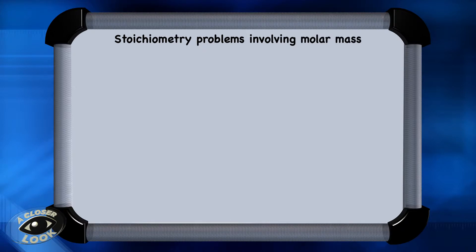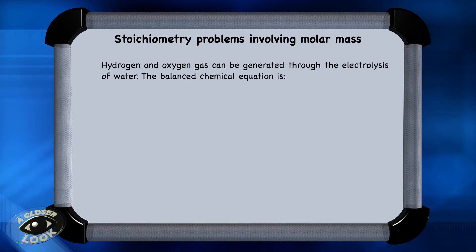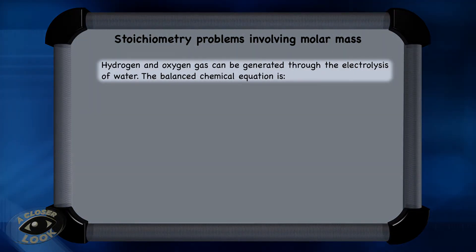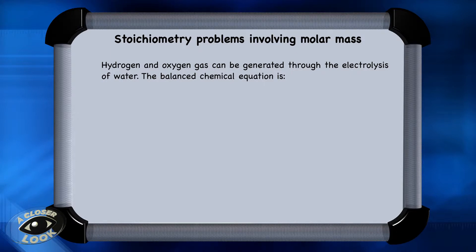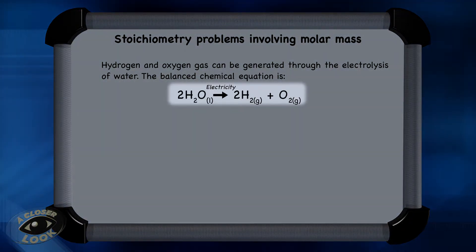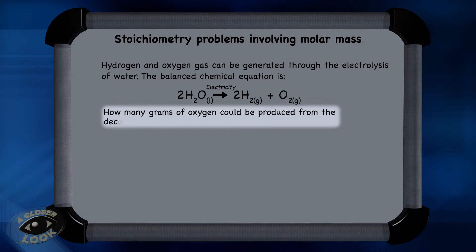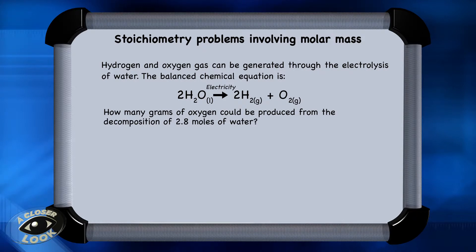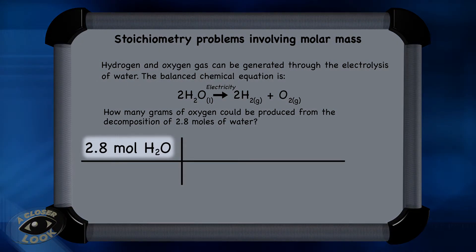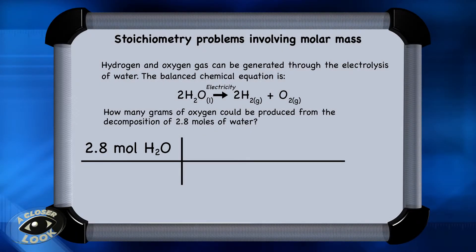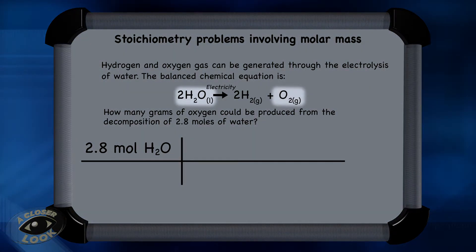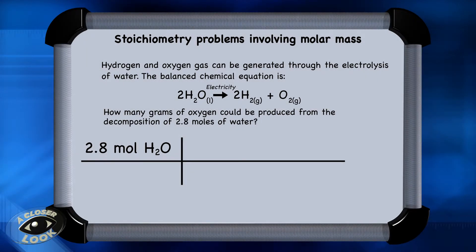This next problem is a stoichiometry problem involving molar mass. Hydrogen and oxygen gas can be generated through the electrolysis of water. The balanced chemical equation is: 2 moles of water yields 2 moles of hydrogen plus 1 mole of oxygen. The question asks how many grams of oxygen could be produced from the decomposition of 2.8 moles of water. The first step is to put 2.8 moles of water in the upper left-hand corner of the conversion chart. You'll need to use the mole ratio to get from water to oxygen, using the coefficients from the balanced equation.